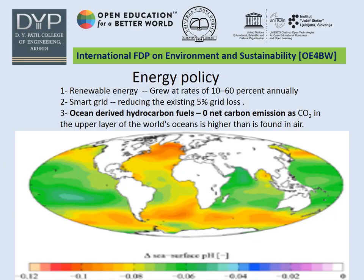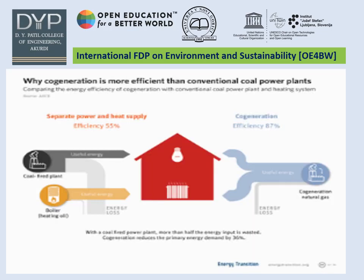Some energy policies include renewable energy, which is growing at 10 to 60% annually. Smart grids are reducing existing grid losses by 5%. Ocean-derived hydrocarbon fuels have zero net carbon emission because the upper layer of the ocean contains higher carbon dioxide than the air. We should also promote cogeneration: when combining heat and power together, overall system efficiency reaches 87%, compared to only 55% when cogeneration is not used.